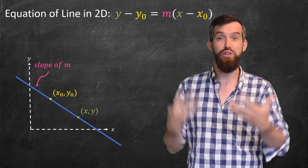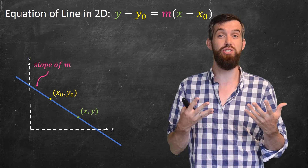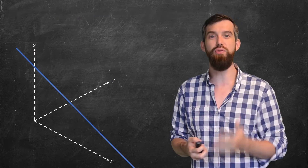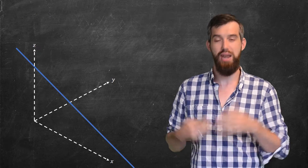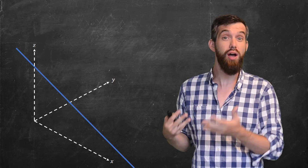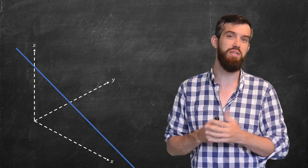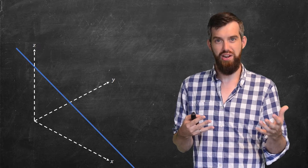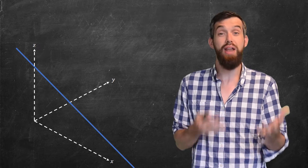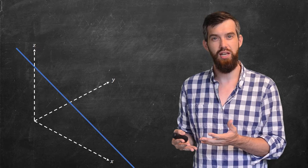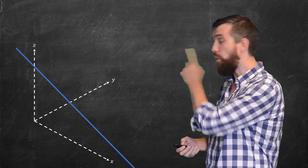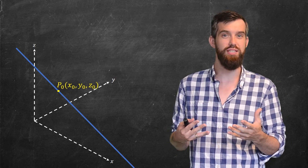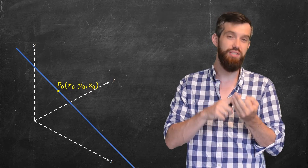Now what we want to do in this video is generalize this to higher numbers of dimensions. So let's consider the three-dimensional case. We have an x, y, and z-axis, and some line that goes through this space. To find an equation of this line, I'm going to place some particular point on that line — some p0 with coordinates x0, y0, and z0.